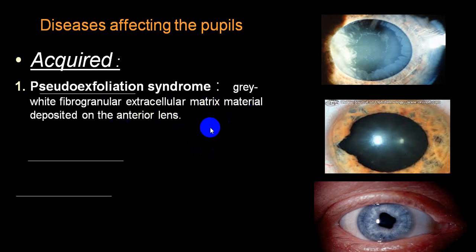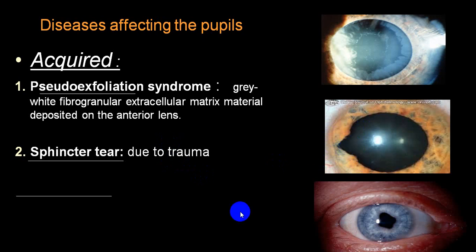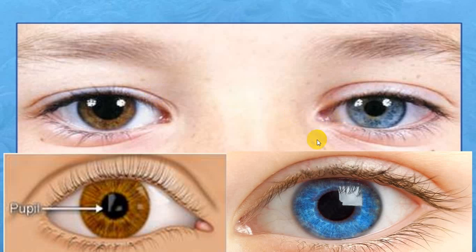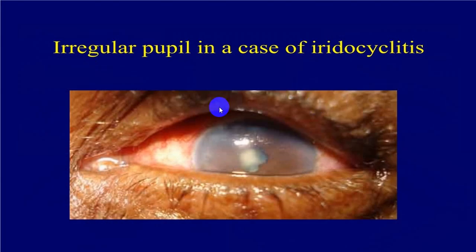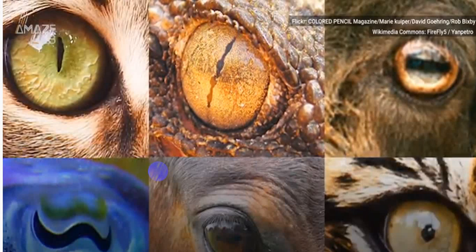The margin of the pupil in iridocyclitis is irregular — it is not round and smooth. In different animals, pupils have abnormal shapes: rectangular, elongated, and others. Now while assessing pupillary reflex, we perform different tests.